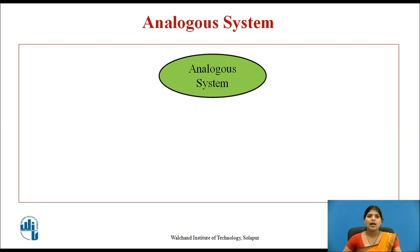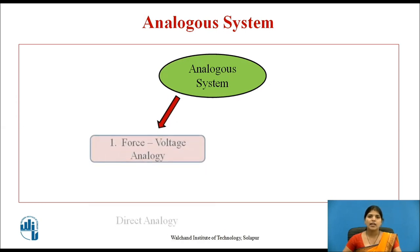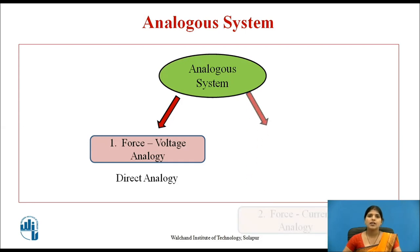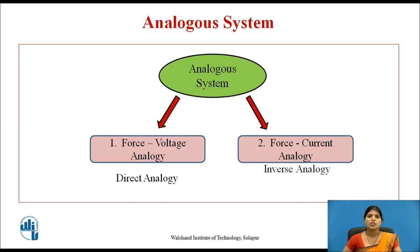There are two methods of obtaining electrical analogous networks. First, force voltage analogy, that is direct analogy. And second is force current analogy, that is inverse analogy.